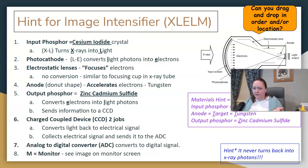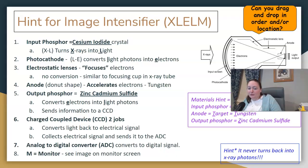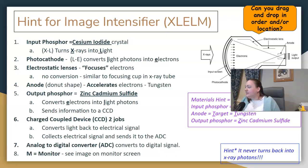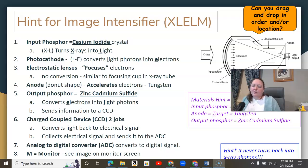The output phosphor, made of zinc cadmium sulfide, converts electrons to light photons. Once we have light photons at the end, we need to convert them to see them on the monitor. From digital radiography, the charge-coupled device, or CCD, can convert light to an electrical signal and send it to the analog-to-digital converter. The ADC converts the electrical signal to a digital signal, and then we can see it on our screen or monitor.